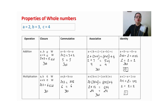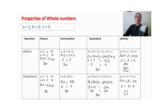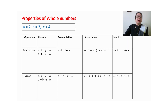So we can see that addition and multiplication of whole numbers hold all four properties: closure, commutative, associative, and identity element. Now we will do the same with subtraction and division.